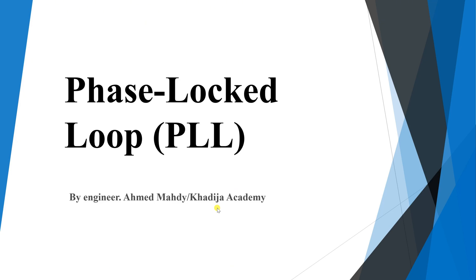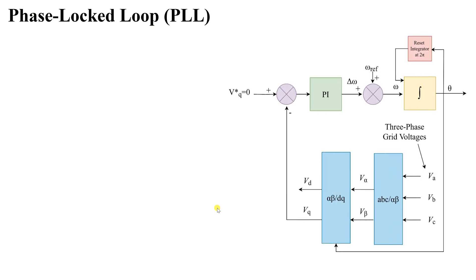We learned about the different methods in order to estimate our angle, which is used in the Park transformation or the transformation from alpha-beta to DQ, which is used in our vector control for our system. Now in the phase-locked loop, what are we exactly looking for?